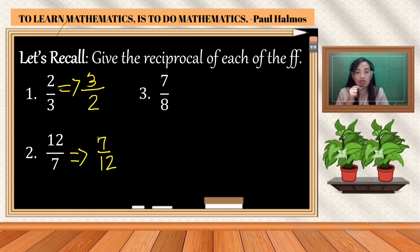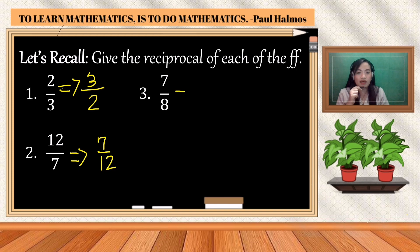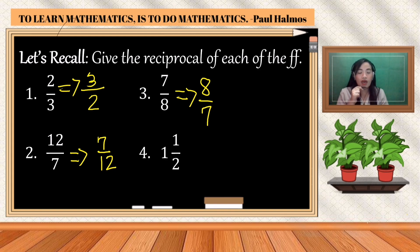Number three: the given is seven over eight. What is the reciprocal of seven over eight? The reciprocal is eight over seven.